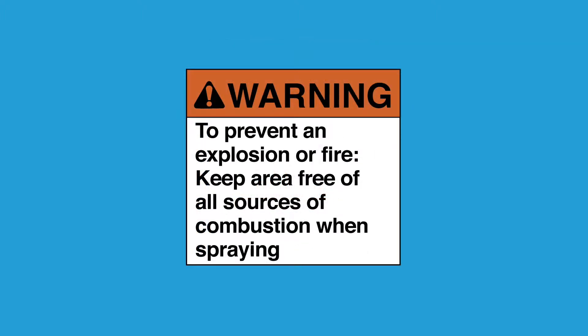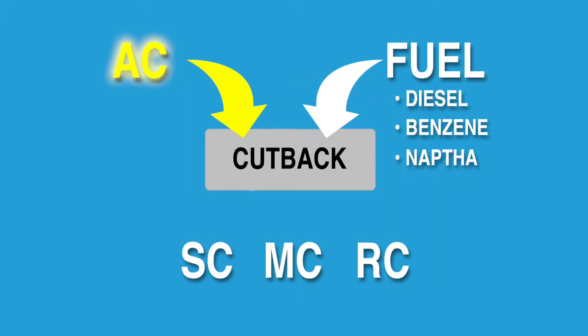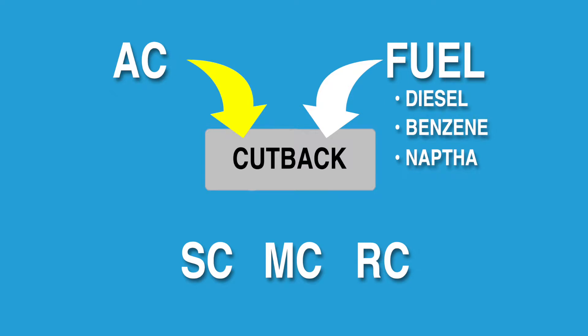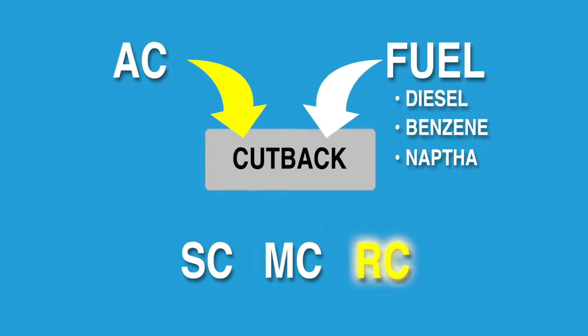Since liquid asphalts are composed of hydrocarbons, they may give off fumes which can be flammable as well as explosive. Cutbacks, in which AC has been blended with either diesel fuel, benzene, or naphtha, are particularly flammable. There are three types of cutbacks: SC, MC, and RC. These designations refer to the curing time — that is, the amount of time it takes for the solvents to evaporate, leaving the residual asphalt cement.